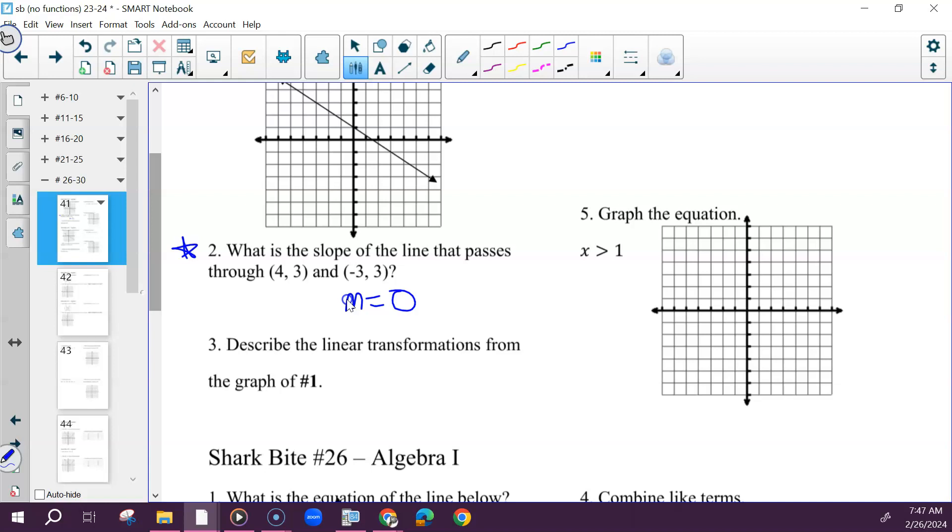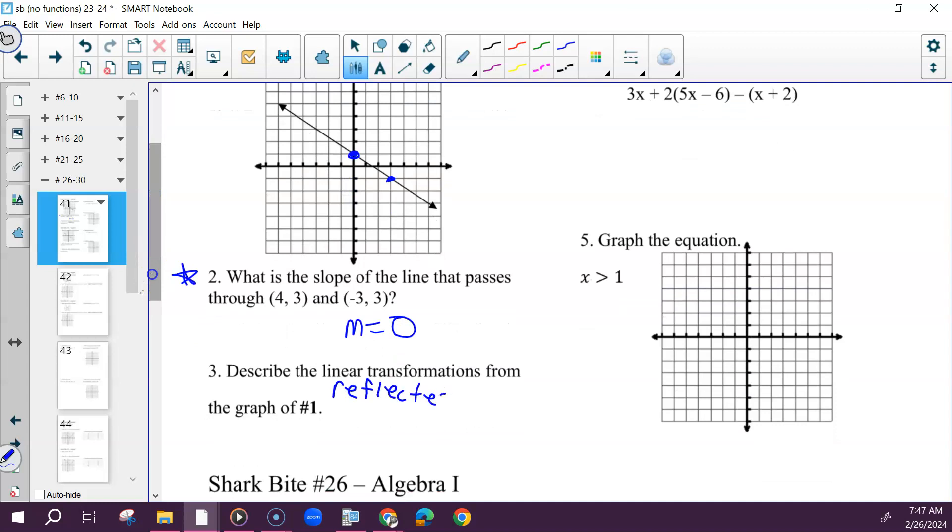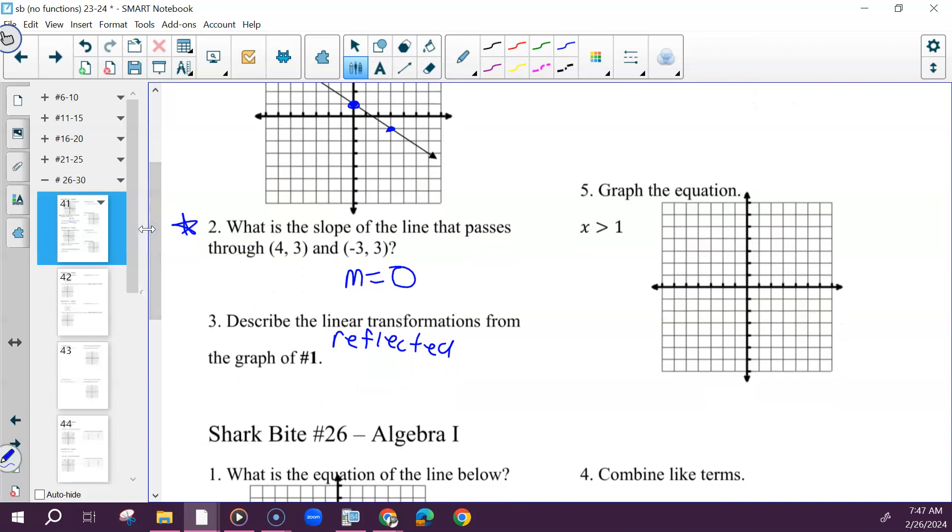I'll do number three for both number ones, depending on what graph you got. So the linear transformation of graph number one, if this is your graph, it doesn't go to the origin. This has a slope of negative two-thirds, which means it was reflected. The slope was reflected. It's less steep by two over three, and it was shifted up one.